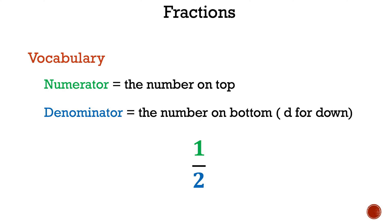Now let's take a look at the vocabulary that you may need to know. Numerator: the number on top. Denominator: the number on bottom. How I remember is D for down. Let's take a look at the fraction one-half. One is your numerator, two is your denominator.